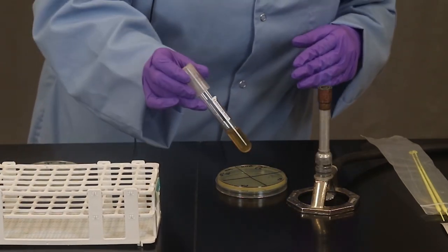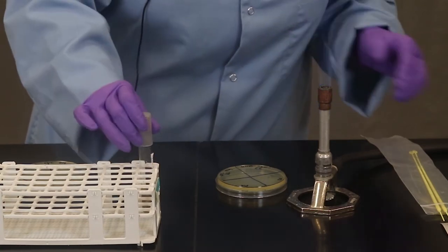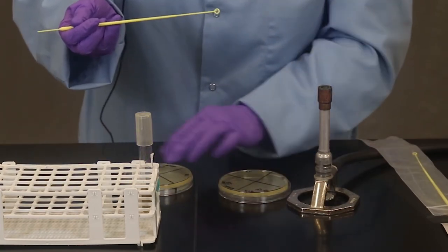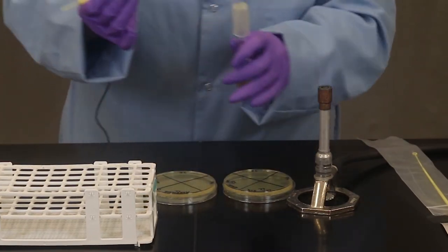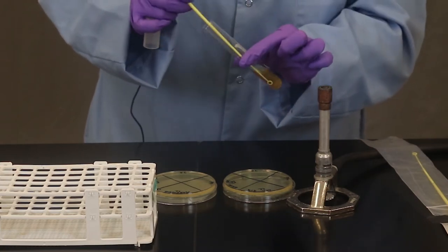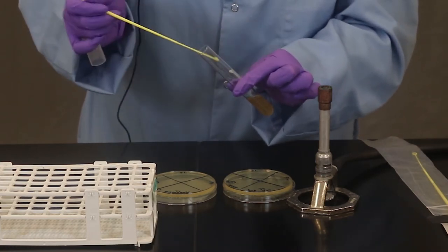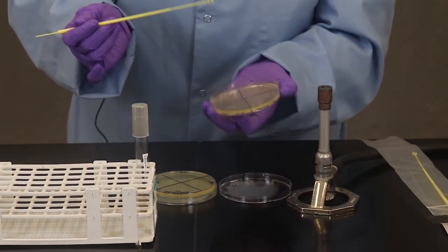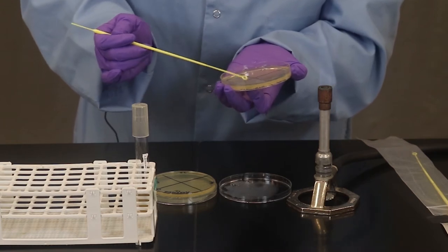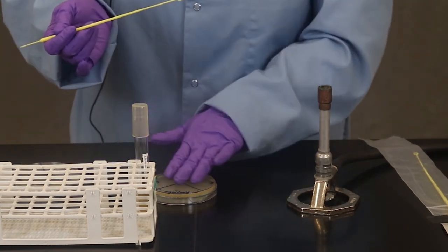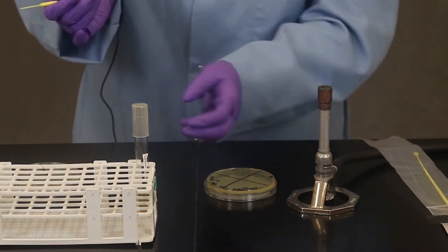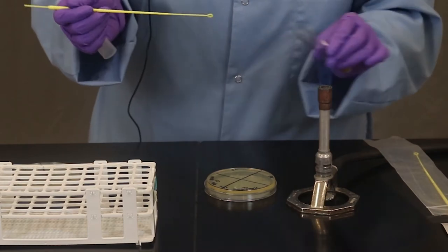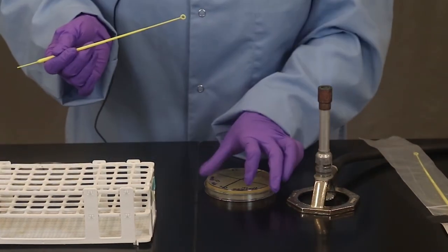The next one up is Lactococcus lactis. Now you do want to be careful. If you're adding a lot of liquid to the plate and you're tipping the plate there's a possibility of it dripping. You can cross contaminate your samples into the other quadrants. So you just want to be careful and pay attention.